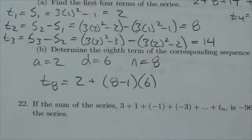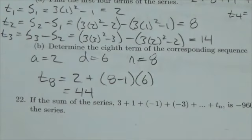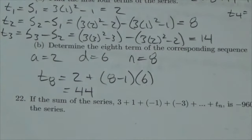So 7 times 6 is 42, plus 2 is equal to 44. So it turns out the 8th term of that sequence is 44.